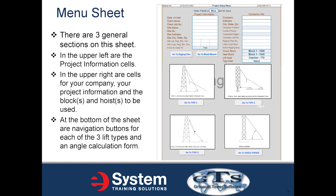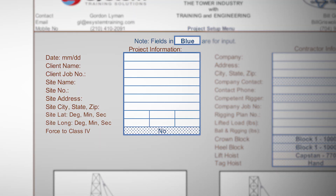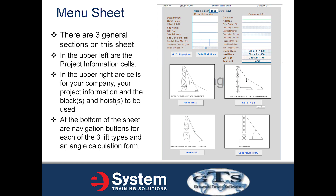There are three general sections on the menu sheet. In the upper left are the project information cells. In the upper right are cells for your company, your project information, and the blocks and hoists that will be used for the particular project. At the bottom of the sheet are navigation buttons for each of the three lift types and an angle calculation form.